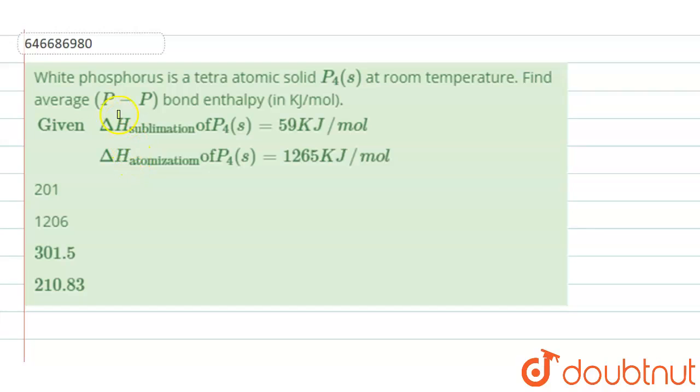Hello everyone, let's see the following question. White phosphorus is a tetraatomic solid at room temperature. Find the average P-P bond enthalpy in kilojoules per mole.